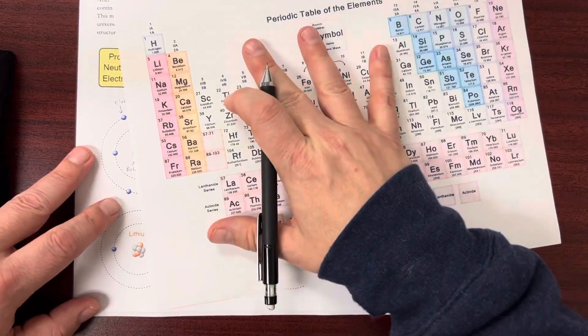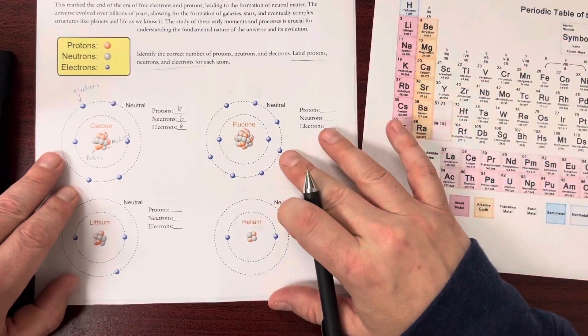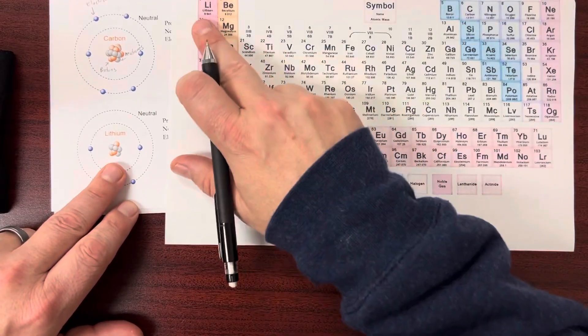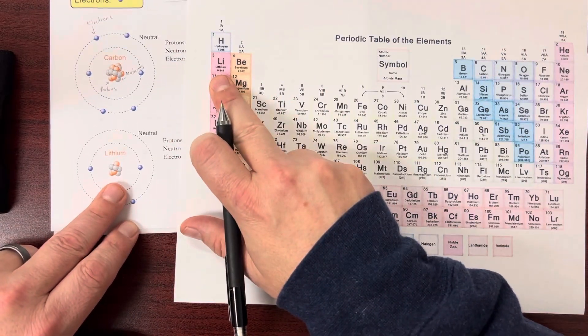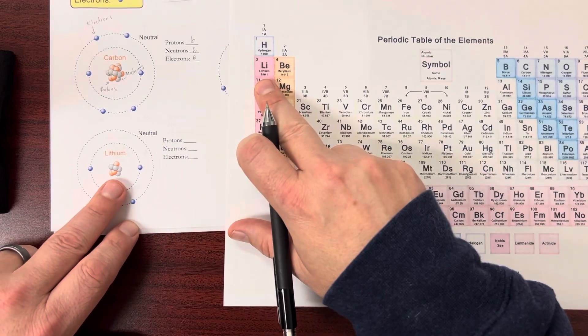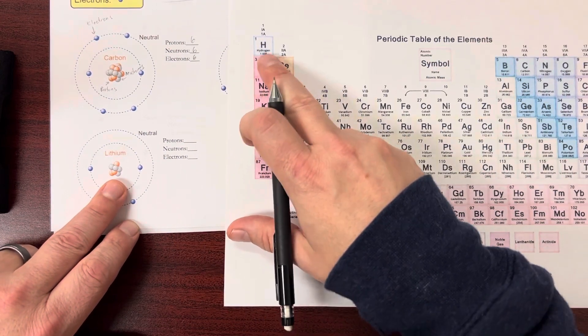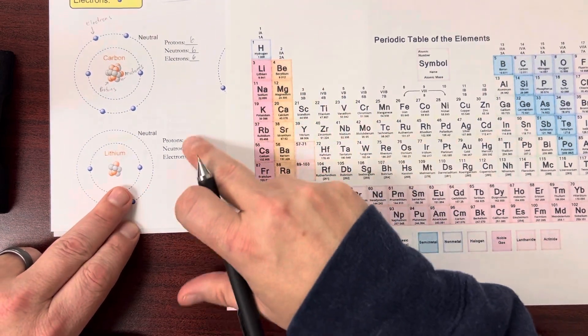You can also look at a periodic table to help you out. So for instance, if I do lithium on a periodic table, well, here's lithium. And based on lithium, if I look at the periodic table, I can answer most of these questions.